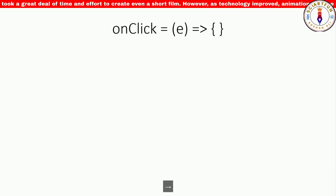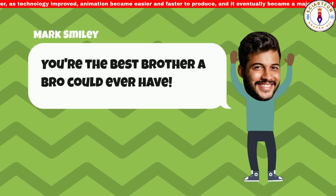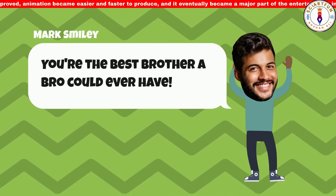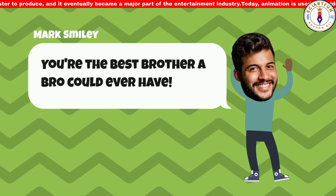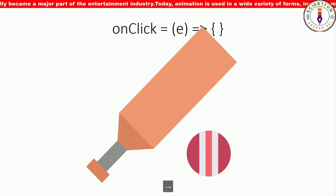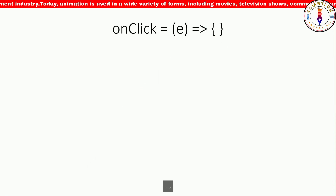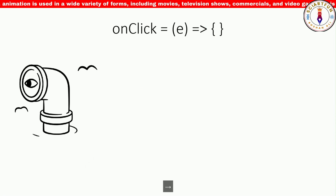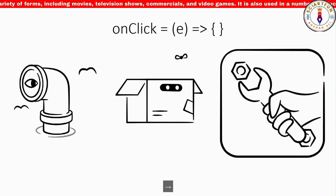It can be used to do things like changing the properties of an object when it is clicked, to move an object when it is clicked, or to display a message when the object is clicked. The onclick property can be used in a variety of different ways. For example, you could use it to create a game where the player clicks on an object to interact with them. You could also use it to create a simulation of physical systems or an interactive art installation.